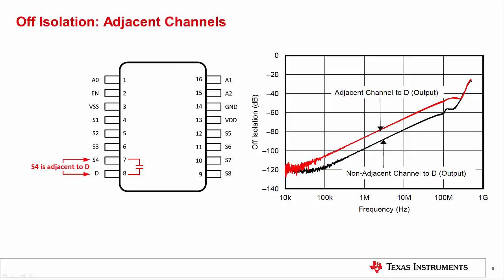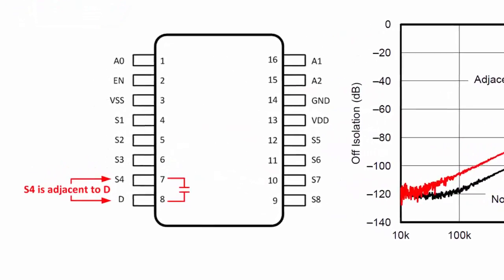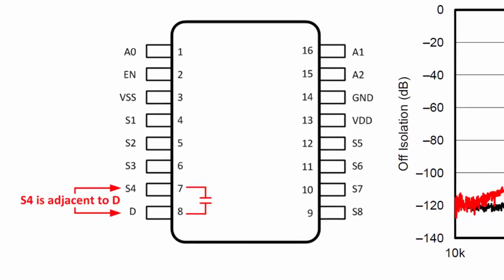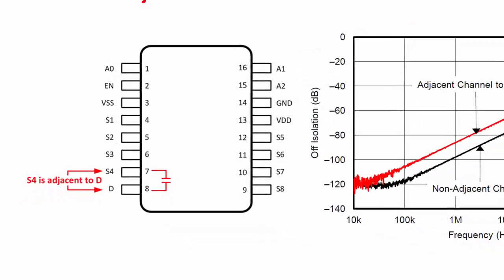Both off-isolation and crosstalk specifications use the terminology adjacent and non-adjacent channels. The term adjacent refers to physical pins on the device — for example, in the case of off-isolation, only channel S4 is adjacent to the output D. It is important to note that these terms refer to adjacent pins of a package, not sequentially numbered pins. For instance, pins S4 and S5 are not adjacent because they are on opposite sides of the package. Adjacent pins will have more parasitic capacitance between them, so they will generally have worse crosstalk and off-isolation.